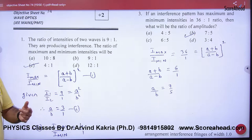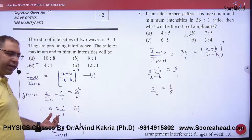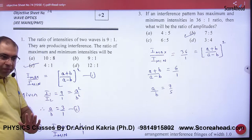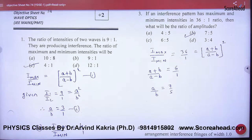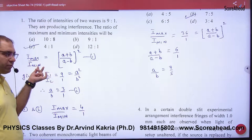Intensity is directly proportional to amplitude square, so what will happen? a square by b square. Here what will happen is a by b. Now the ratio of maximum to minimum intensity, the formula is a plus b by a minus b square.